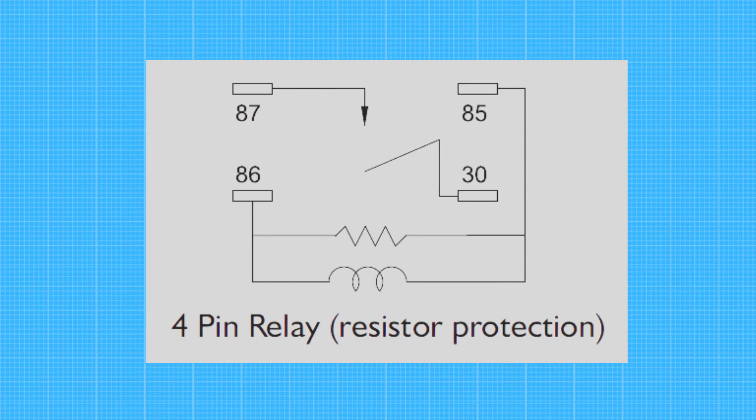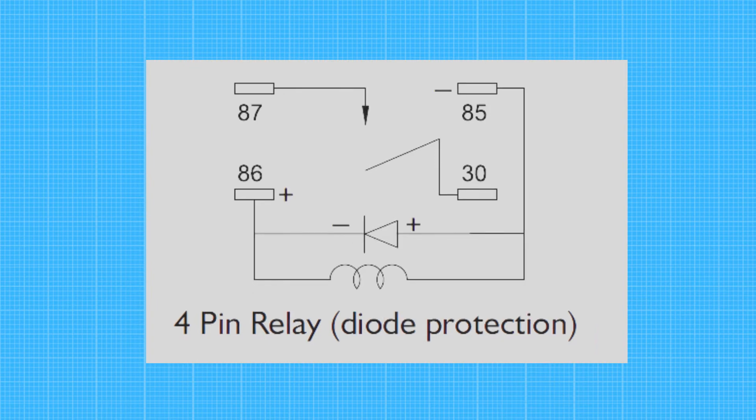Here are a few examples of how you can use a relay in an electrical circuit. In this diagram, a four-pin relay is connected to protect the resistor. In the second example, which is very similar to the first diagram, the diode is connected here and this circuit has the purpose of protecting the diode.